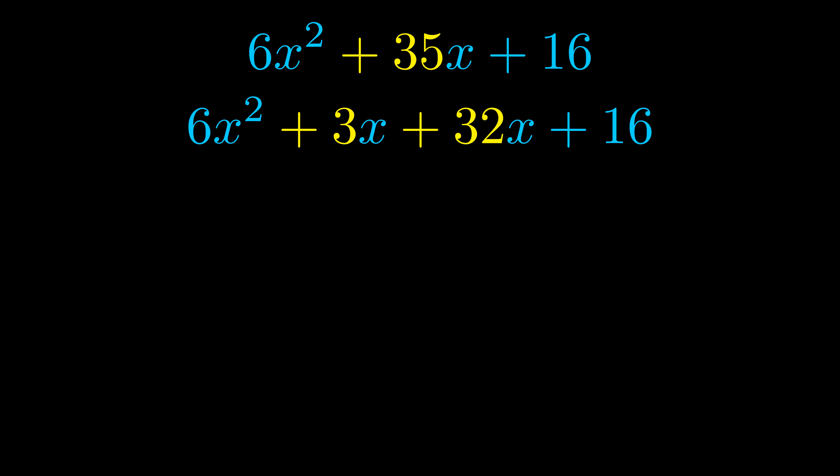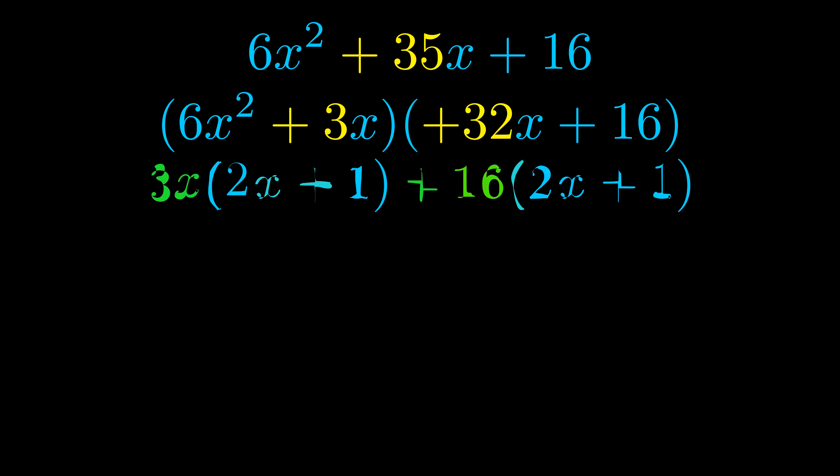Once we've done this, we put parentheses around the first term and the last term. We do that so we can take the greatest common factor out of both terms. We can see the greatest common factor is now outside in green.